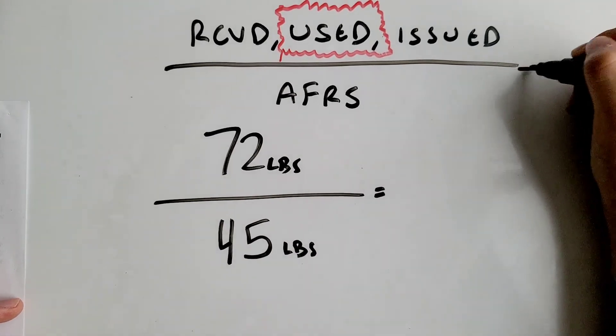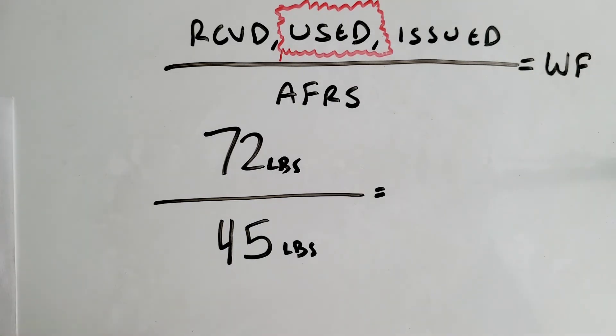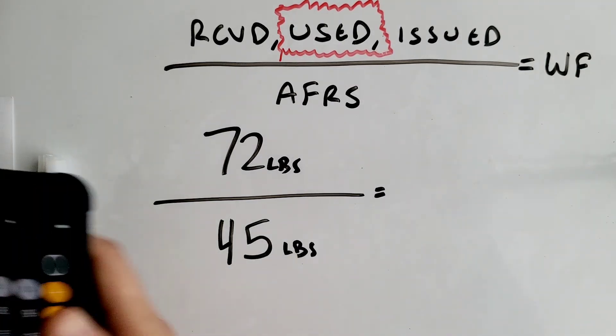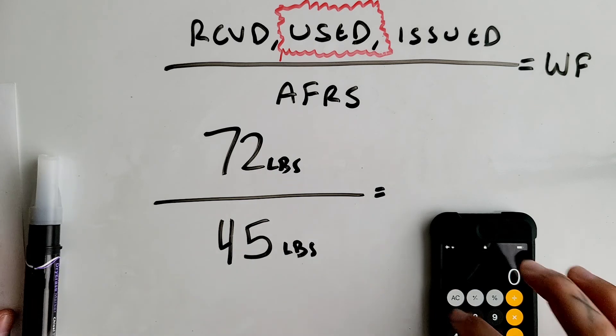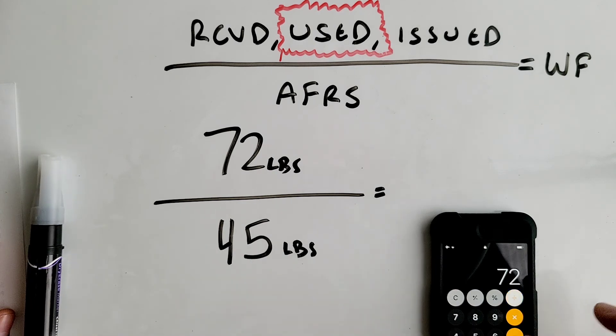This is going to equal your working factor. Just divide these two together: 72 divided by 45 equals 1.6. So 1.6 is your working factor.